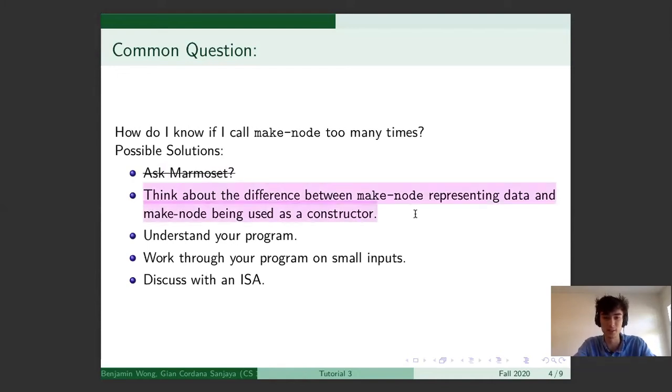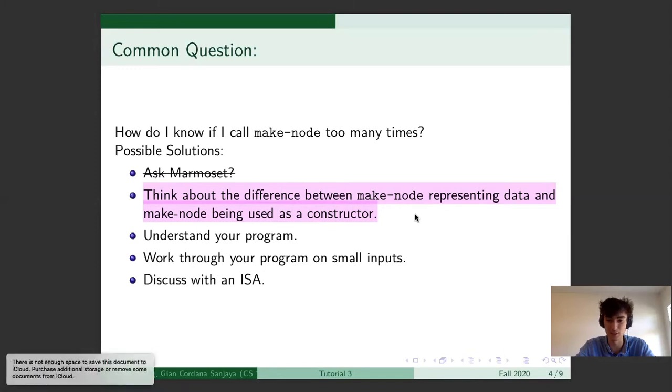So a better way is to think about the difference between make node representing data and make node being used as a constructor. So if you call make node on two new things, that's using make node as a constructor and it counts as one call. If you are using something else that is already constructed, like you have a tree and it is make node empty empty. If you use that tree for something, it does not call make node.